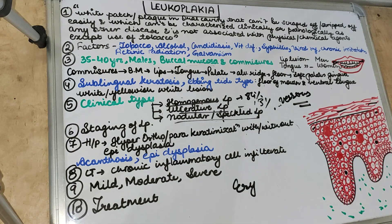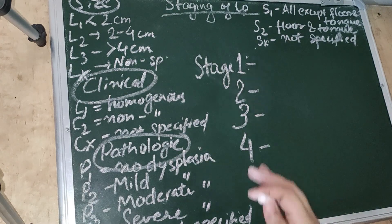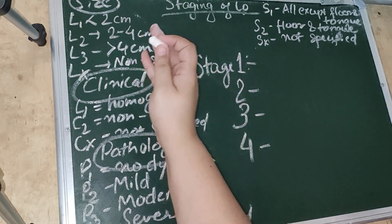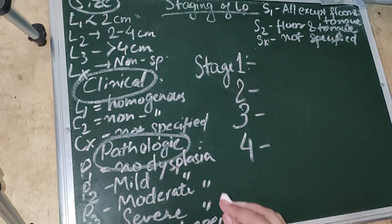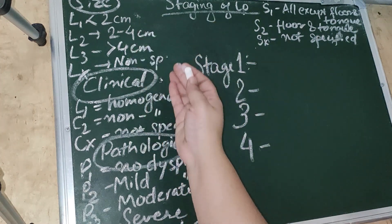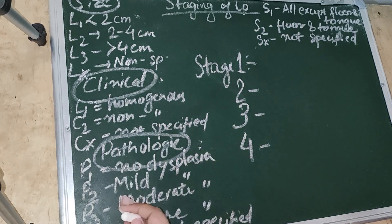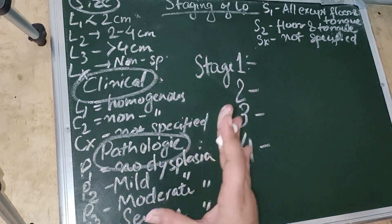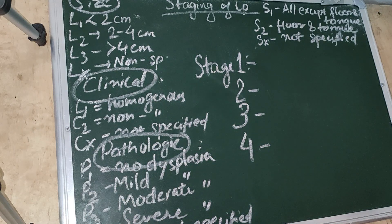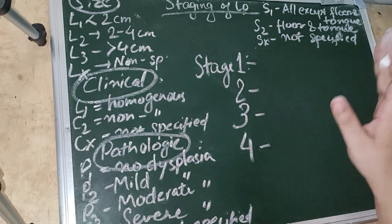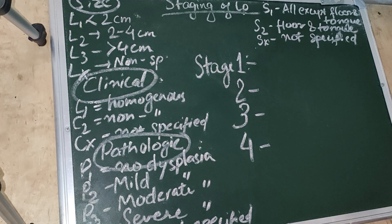The staging of leukoplakia is based on clinical and pathologic features as well as site. Size: L1 is less than 2 cm, L2 is 2–4 cm, L3 is greater than 4 cm, LX is not specified. Clinical aspect: C1 is homogeneous, C2 is non-homogeneous, CX is not specified. Pathological feature refers to dysplasia: P1 no dysplasia, P2 mild, P3 moderate, P4 severe, PX not specified. Site: S1 is all oral cavity sites except floor of mouth and tongue; S2 involves the floor of mouth and tongue.